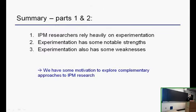To sum up this first chunk of the talk: I've suggested that as pest management researchers we tend to rely very heavily on experimentation — that's what we've been taught to do. But experimentation, like any approach to research, has both strengths and weaknesses. The strengths are manifold and widely acknowledged, but the weaknesses are also there. So we have some motivation for looking to other kinds of research approaches that can complement the strengths of experimentation. As we've seen in this little review, in many cases the strengths and weaknesses of experimental and observational approaches are actually complementary.